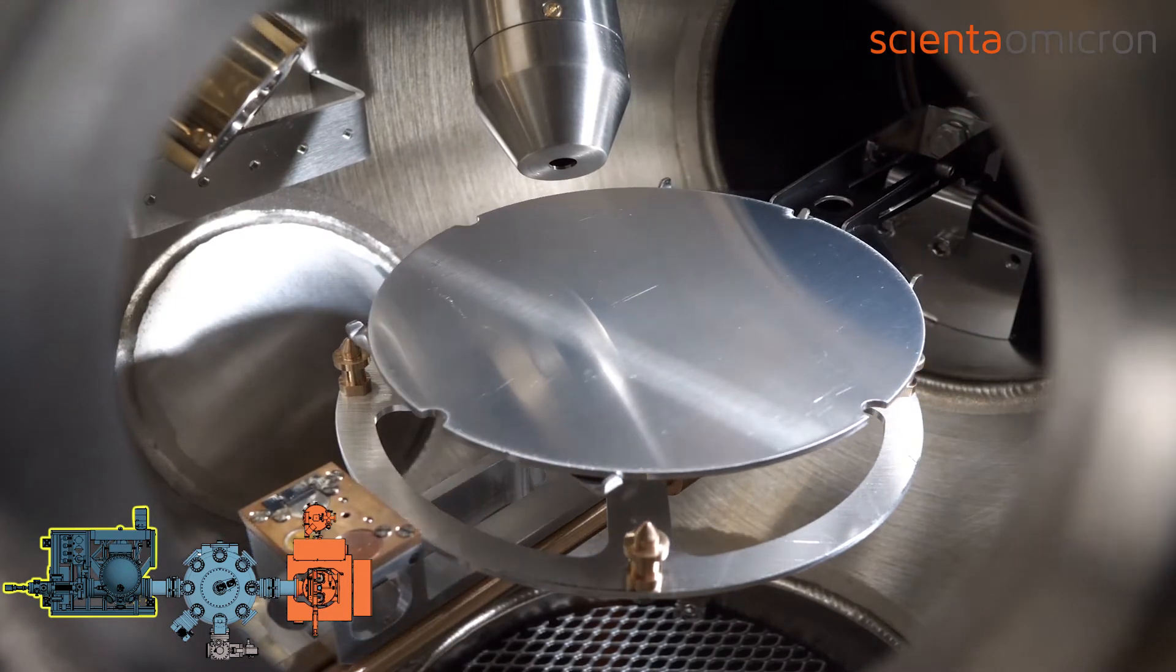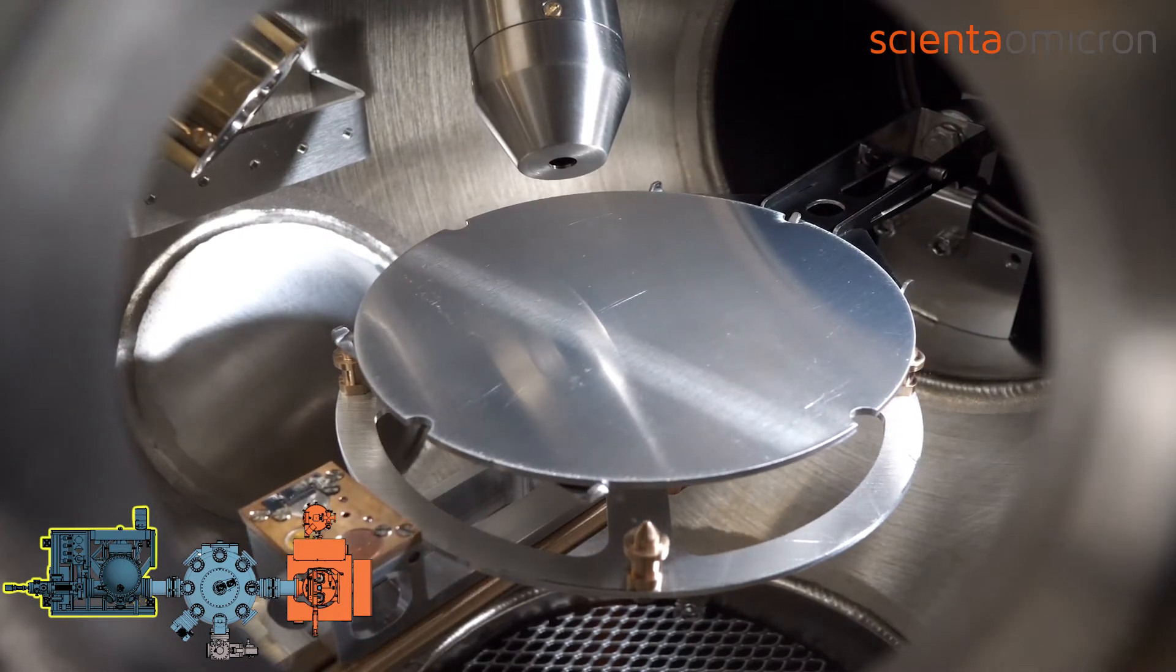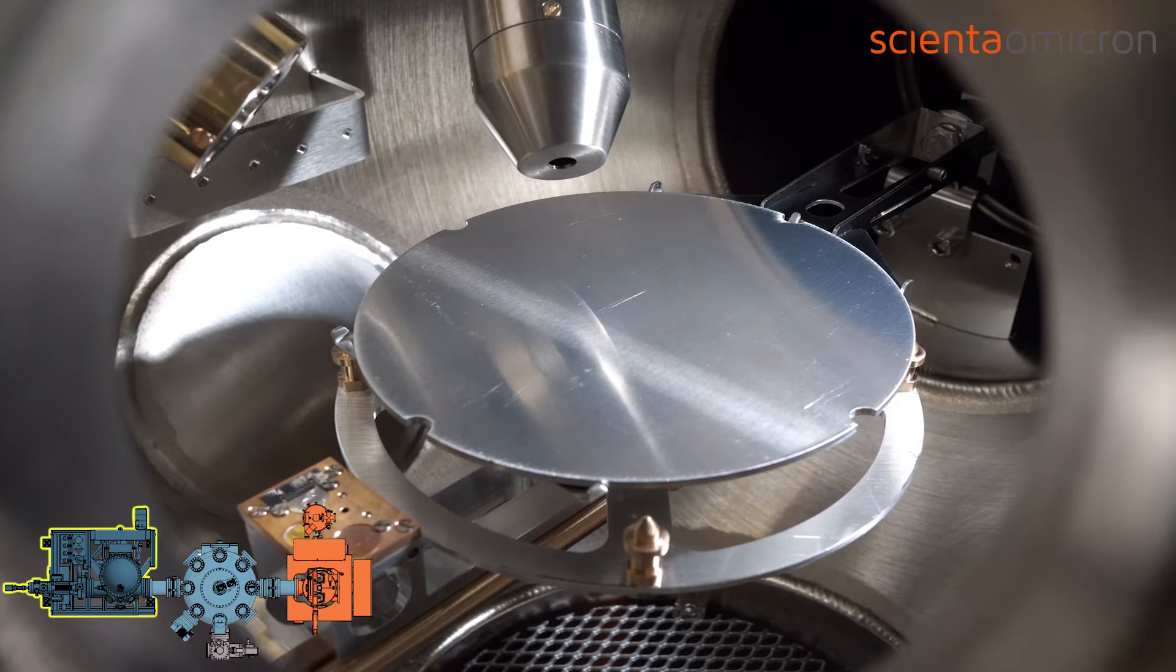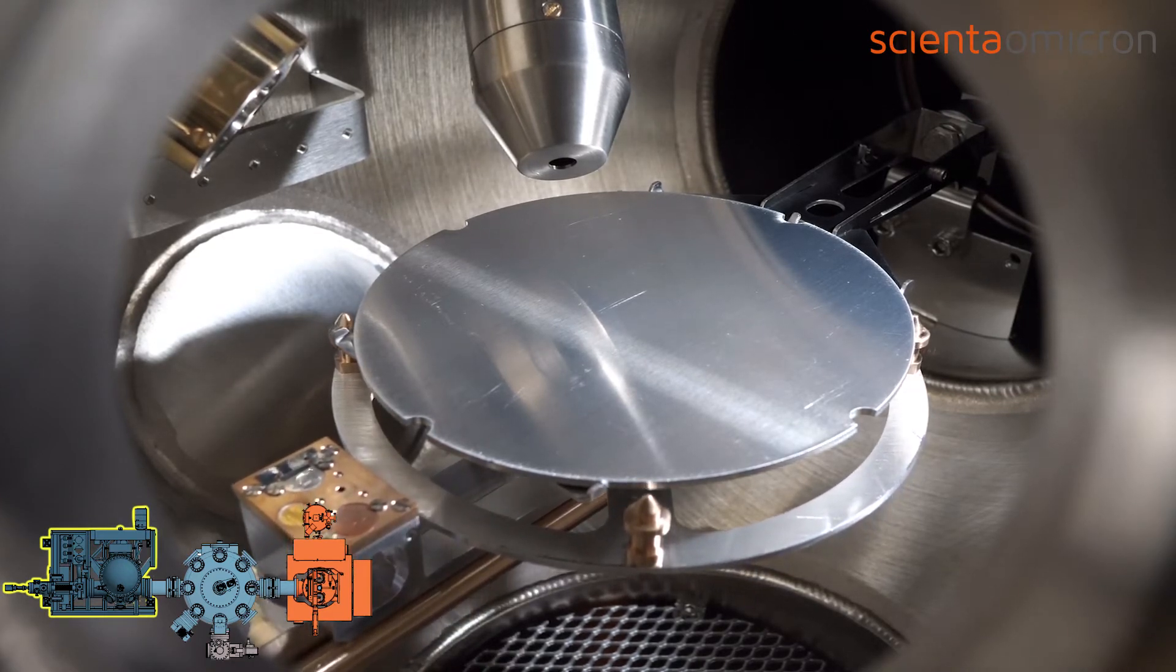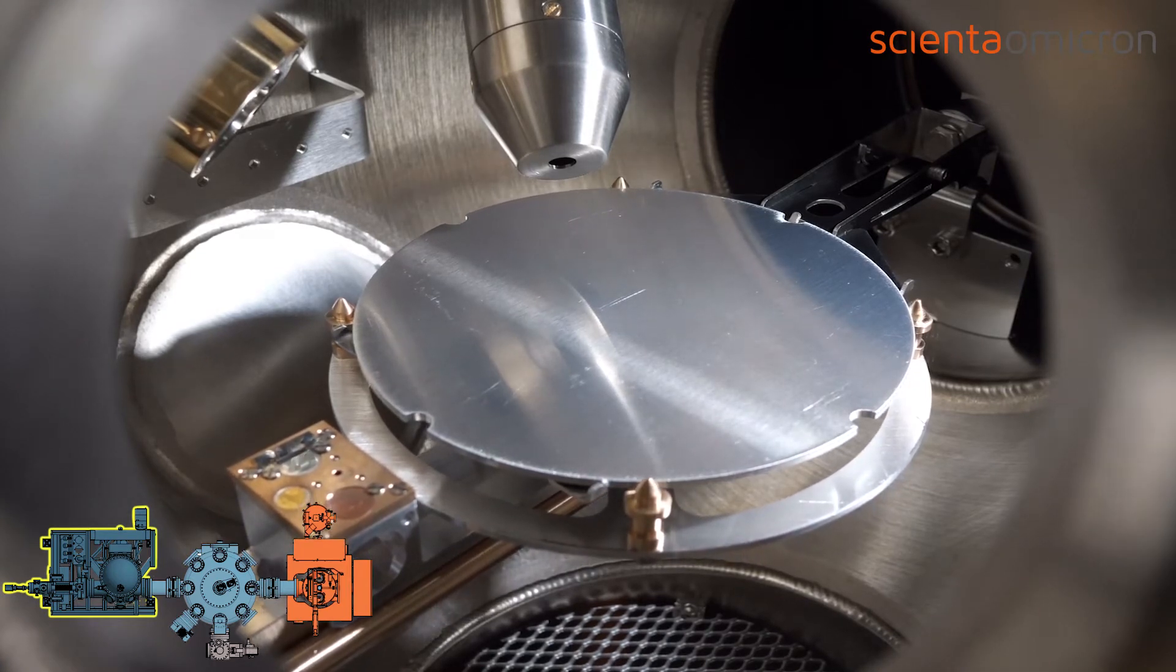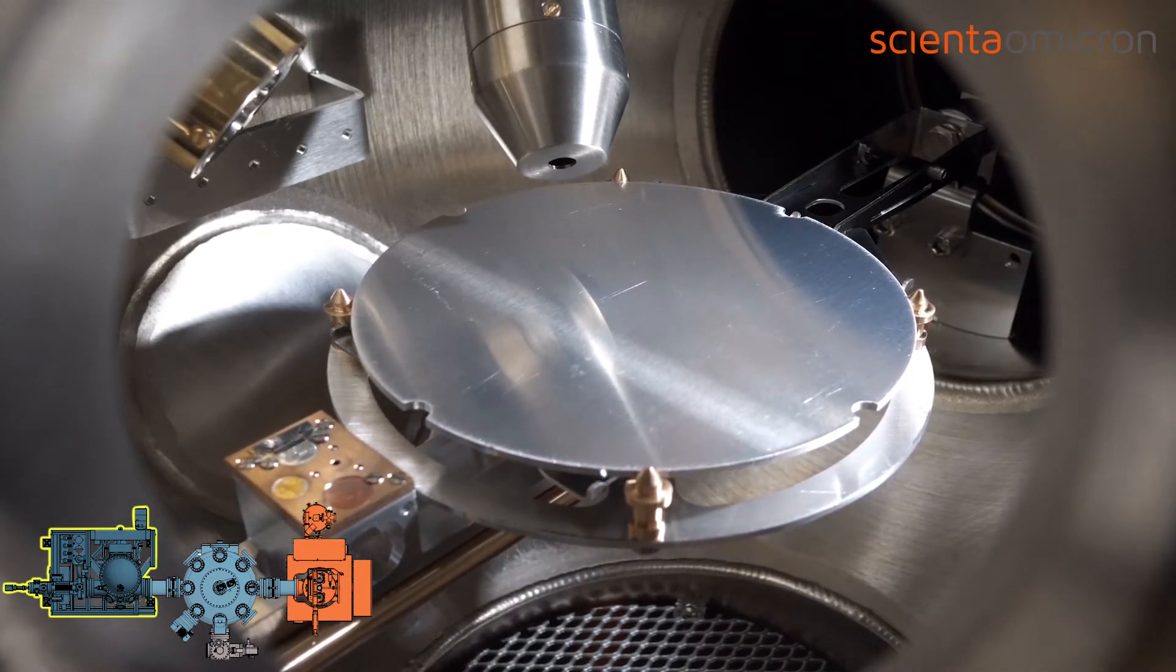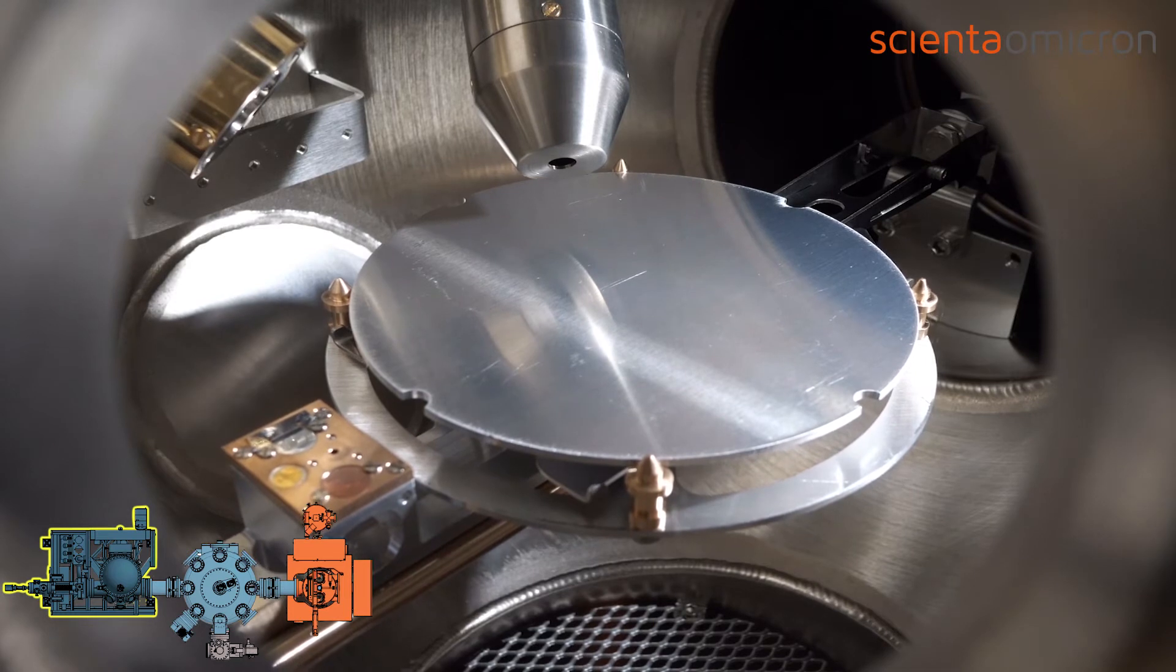After confirmation, the wafer holder is positioned above the manipulator. Then, the XPS manipulator is lifted in order to hand over the wafer holder from the fork acceptor.